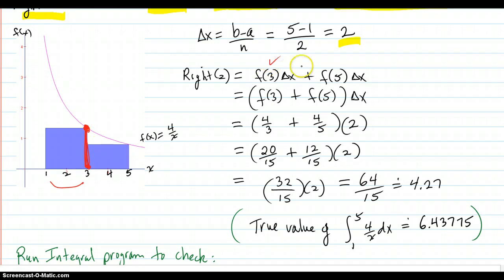f of 3 times your delta x plus you go to the right end point of the next sub-interval, which happens to be 5, and do the f of x value there, which is f of 5.